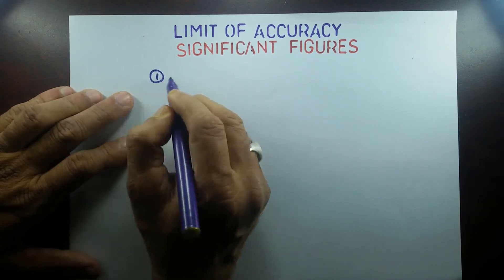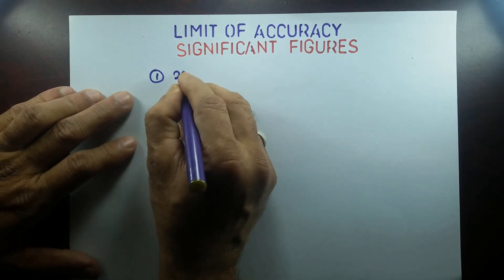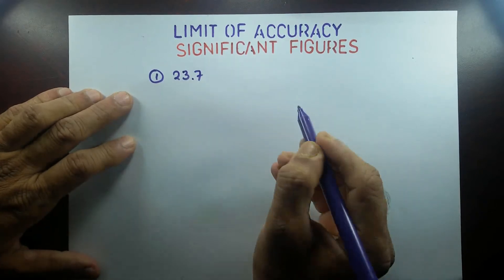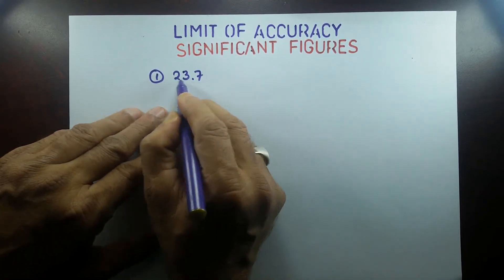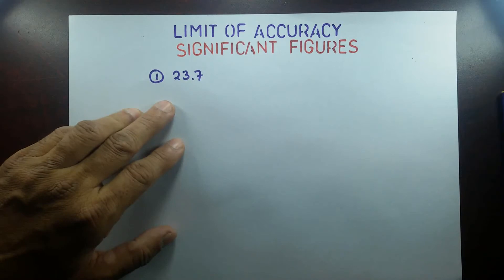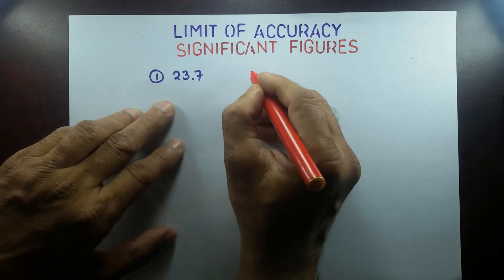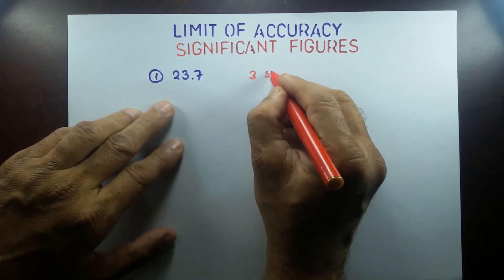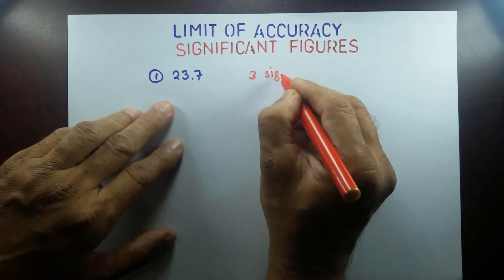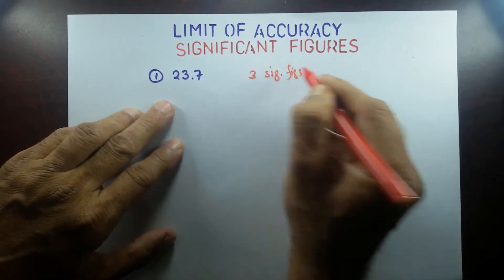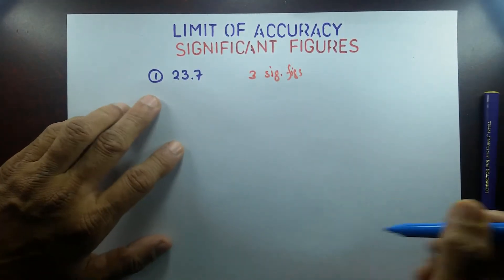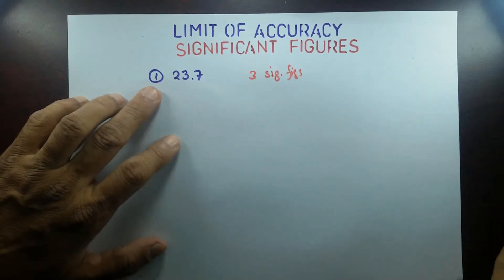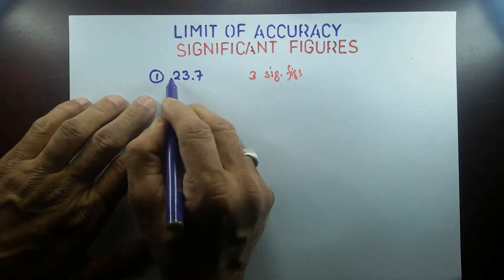First, let me look at some numbers and count how many significant figures they have. If I write down 23.7 — I have a decimal point and three digits — this is three significant figures. The short form is '3 sig figs.' So 23.7 has three significant figures. Most of the time, all non-zero digits are significant.